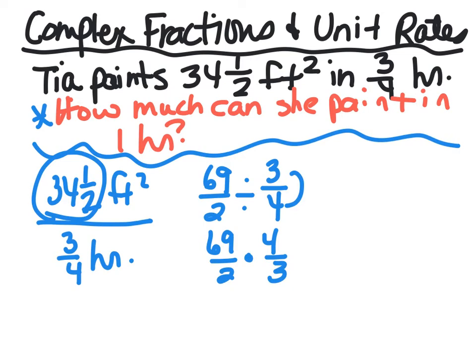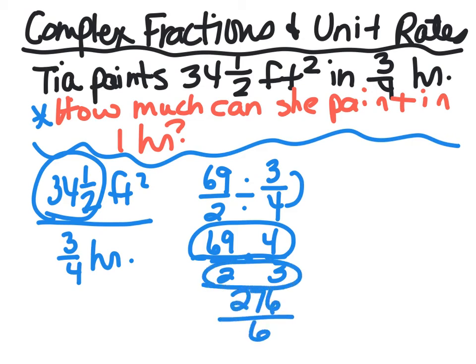So now we can multiply across, and we've got 69 times 4 is 276, and 2 times 3 is 6.